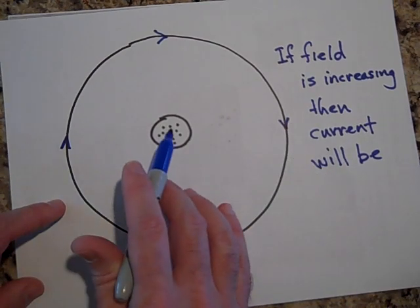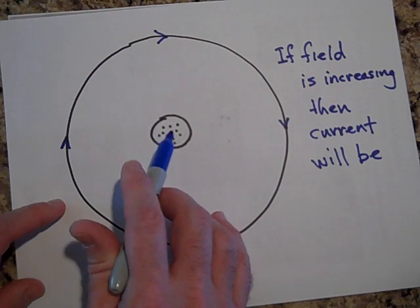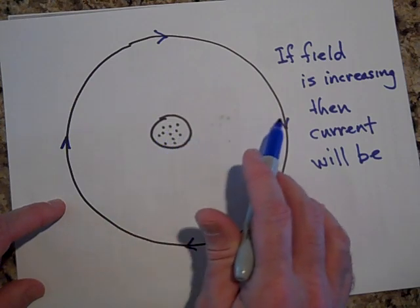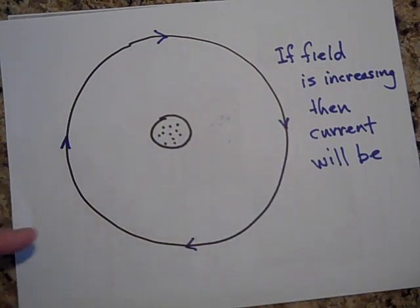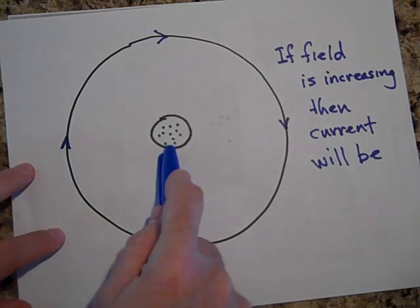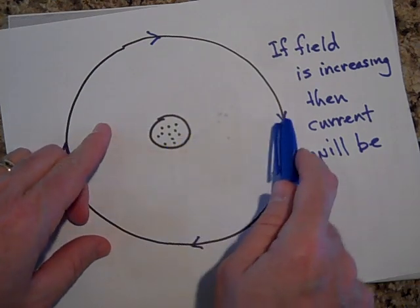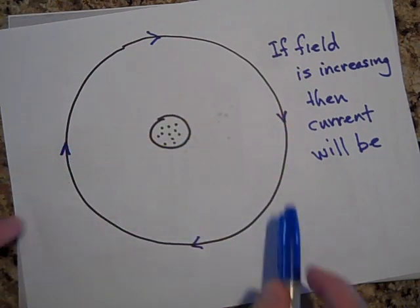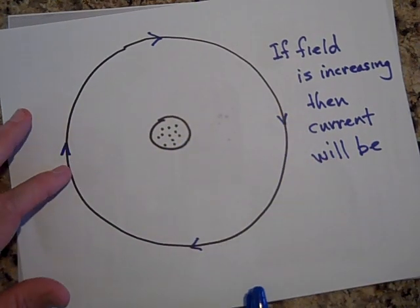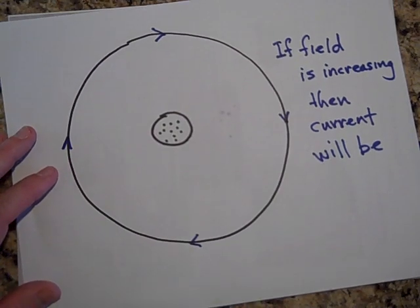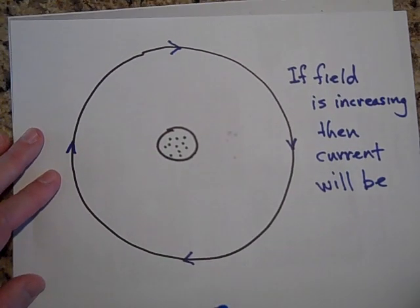And so somehow there's a signal being sent from this changing magnetic field all the way out to that wire, maybe an electromagnetic signal. Maybe when this changes, maybe electromagnetic waves are sent out and cause that current to go the way it's going. So that's just a little bit more mysterious.